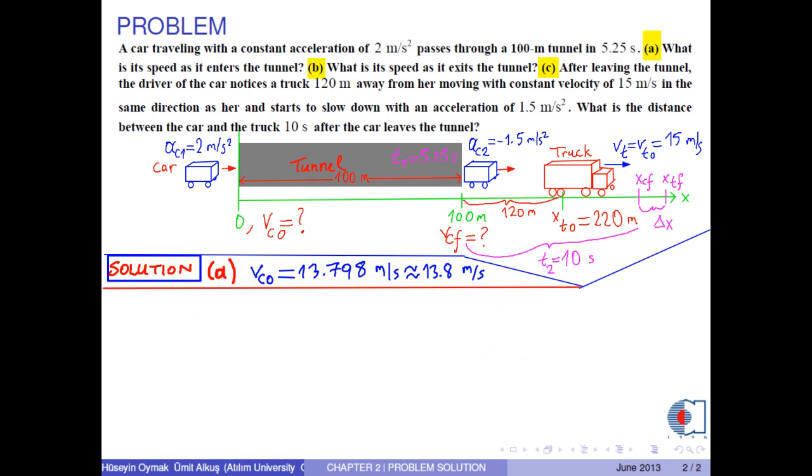In Part B, to find the speed of the car as it exits the tunnel, we use this formula for the velocity. With the numerical values, we get 24.298 meters per second, or approximately 24.3 meters per second in three significant figures.